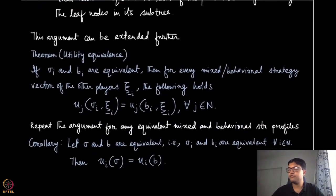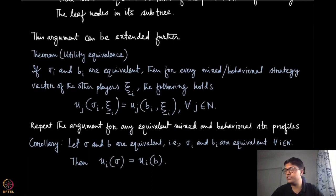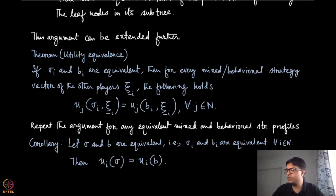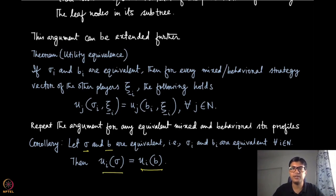This argument can be extended further to utility equivalence. If you have two strategies — mixed and behavioral — which are equivalent, then for every mixed or behavioral strategy vector of the other players, the equivalence also holds for the utilities. This comes as a byproduct of the equivalence of behavioral and mixed strategies. You can repeat this argument for any equivalent mixed and behavioral strategy profiles — if for every player the corresponding sigma_i's and b_i's are equivalent, then the utility at those strategy profiles is also the same.